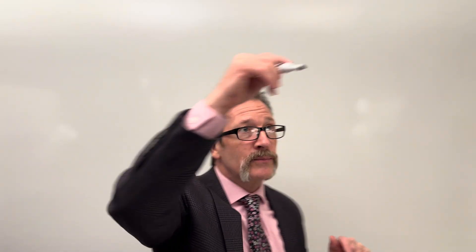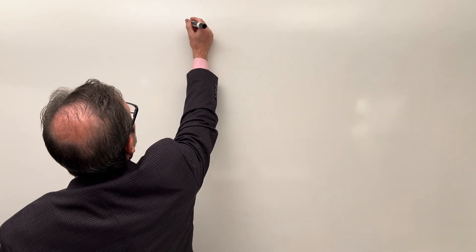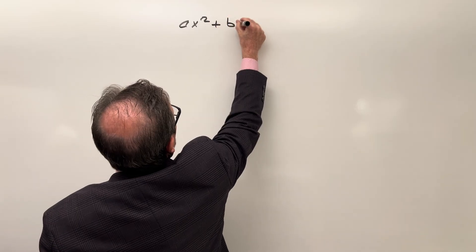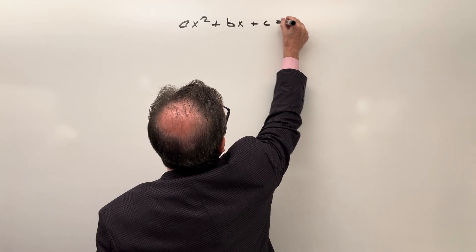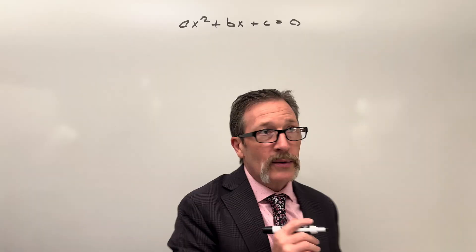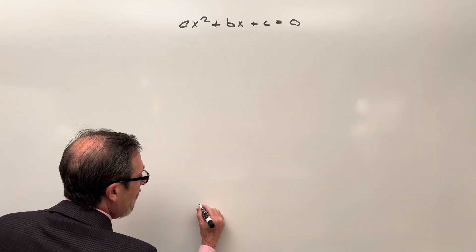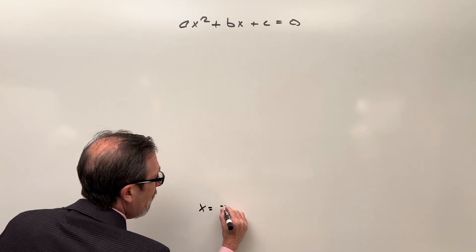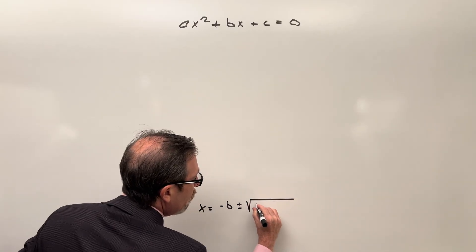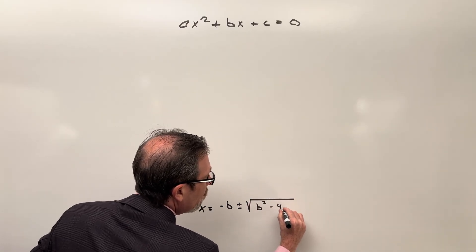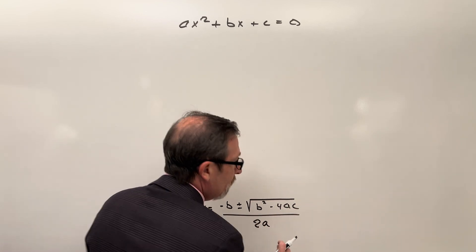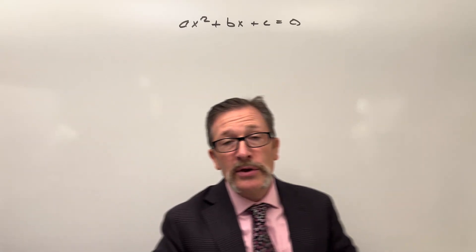We're going to start off with ax² + bx + c = 0 — everyone's familiar with that — and then we're going to work down to the quadratic formula. We're eventually going to end up saying that x is equal to minus b, plus or minus the square root of b² minus 4ac, all over 2a.